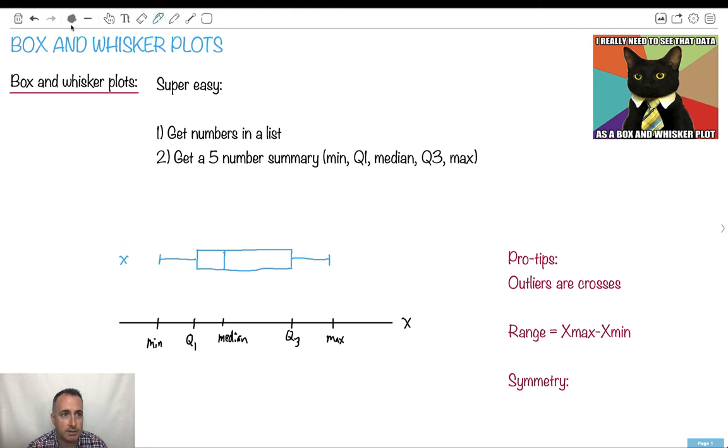What's this little X thing right here? That's an outlier. We draw them as Xs. We call them outliers.